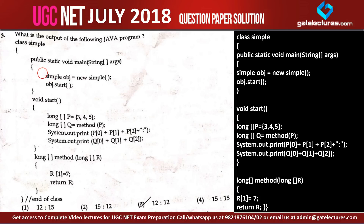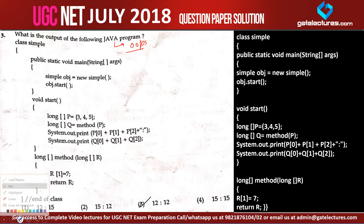Now let us look at question number 3. This question is again very easy and it is from Java programming. Java programming comes under OOPS, that is object-oriented programming. In this syllabus, Java programming is not explicitly mentioned, but you can see some questions in the previous examinations of UGC NET because Java comes under the OOPS programming languages.